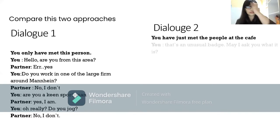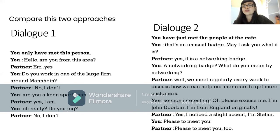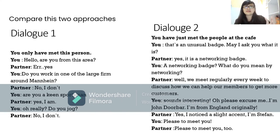Now dialogue two — you've just met someone at the cafe. 'Oh, that's an unusual badge — may I ask what it is?' 'Oh yes, it's a networking badge.' 'Networking badge — what do you mean by networking?' 'We meet regularly every week to discuss how we can help our members get more customers.' 'Oh, it sounds interesting! Please excuse me — I'm John Durbar, from England originally.' 'I noticed a slight accent — I'm Stevant. Pleased to meet you.' 'Pleased to meet you too.'